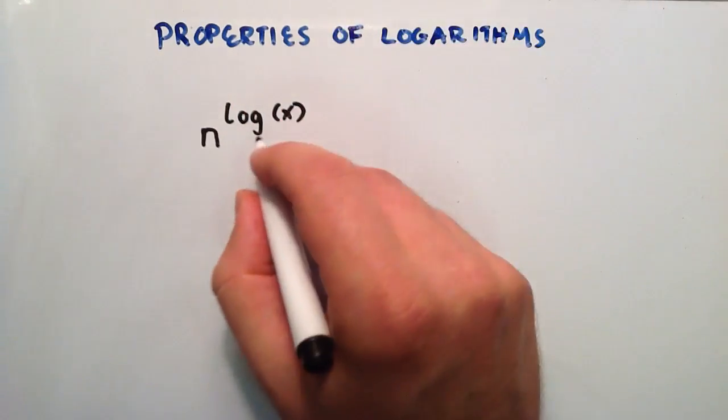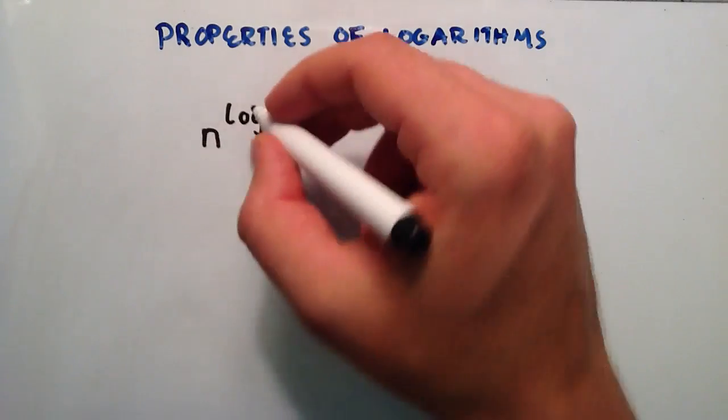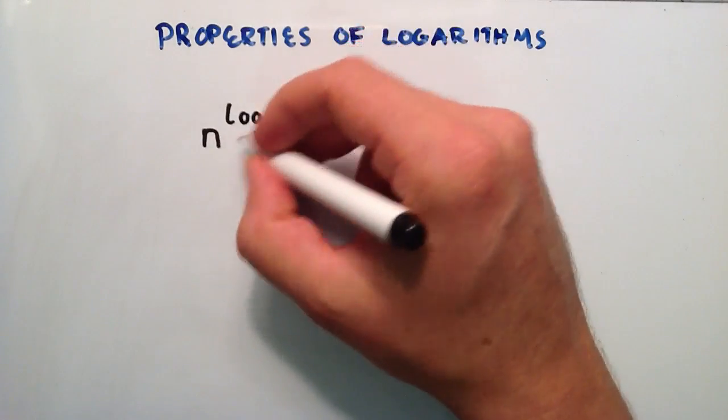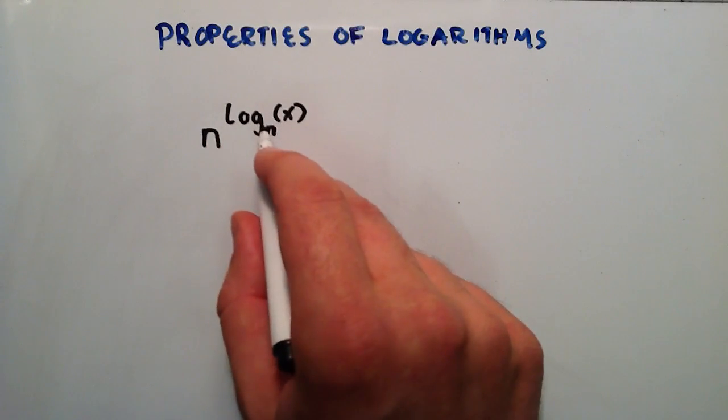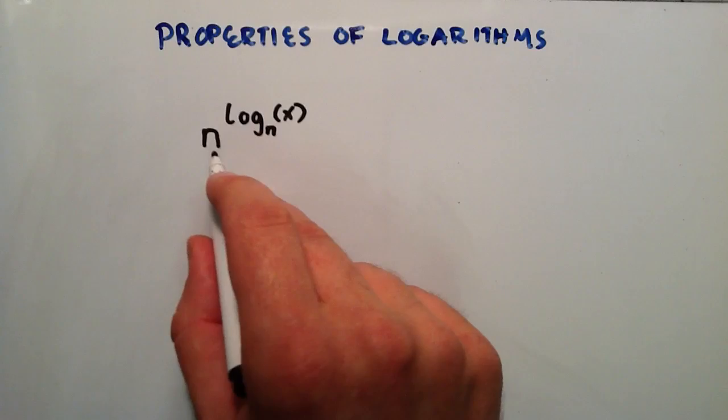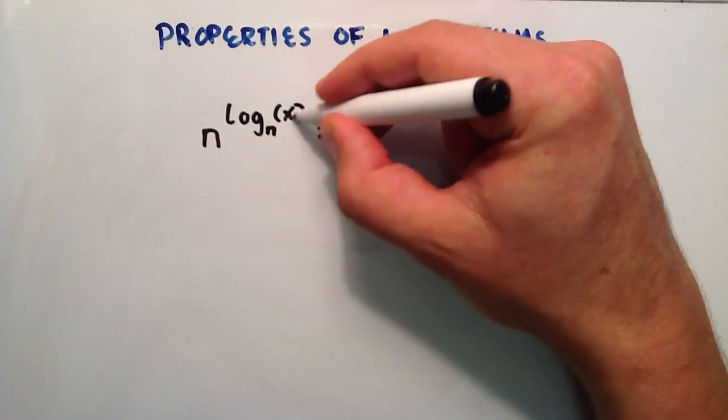So we're going to choose the base of this logarithm to match our base number. So in this case it's going to be n, and any time we have some number raised to a power of a logarithm with the same base as itself, the answer is simply whatever is in the argument of the logarithm.